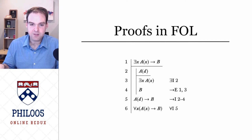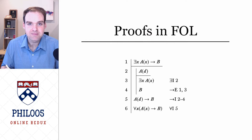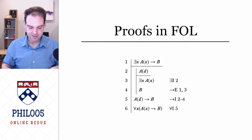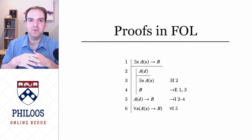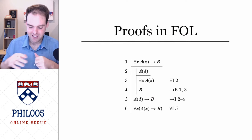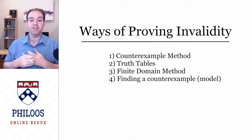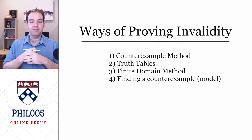We did proofs in first order logic. Now is when I would normally say something like 'let's get our proof juices flowing,' but I'm not going to do it. No proofs today — well, you might do proofs in the homework, but I'm not doing any today. Maybe I'll do some in office hours if you need help. Instead, I'm going to remind you that what we were talking about in the middle of last class was how we can show that a first order logic argument is invalid.